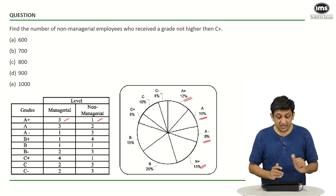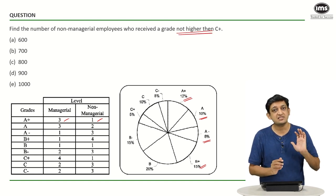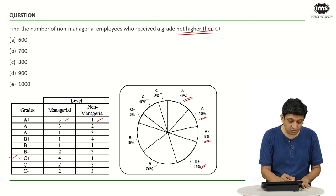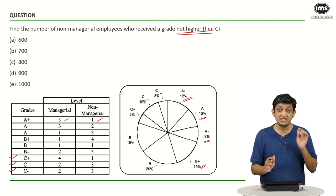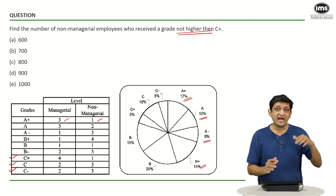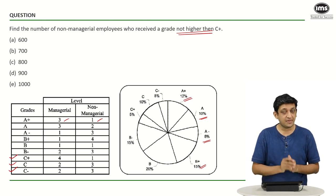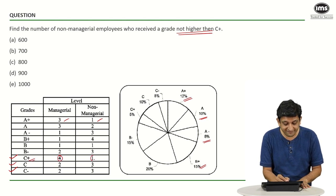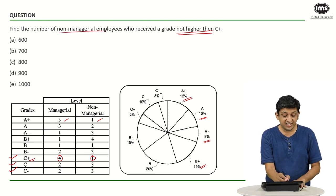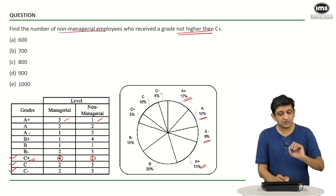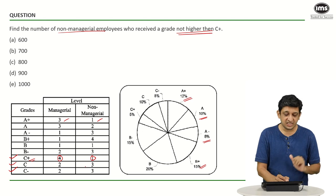Now, we need to know how many people received a grade not higher than C+. Not higher than C+ means C+ is okay, C is okay, C minus is okay. But B minus is not okay because that is a grade higher than C+. So in terms of C+, 4 out of 5 are managers, meaning 1 out of 5 are non-managers. We have to find the number of non-managerial employees, so one-fifth of the people who got grade C+ are non-managerial employees.